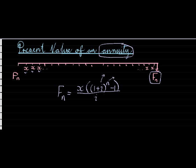N does not represent the number of years I invest — it represents the number of investments that I am making.